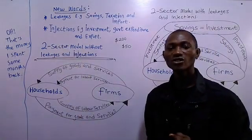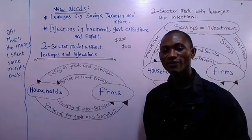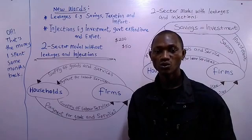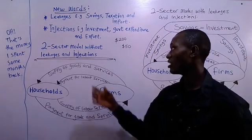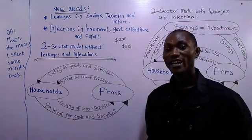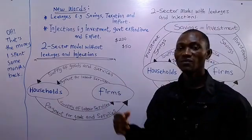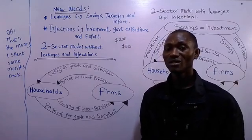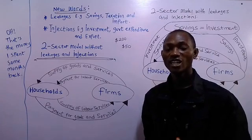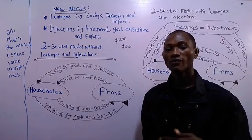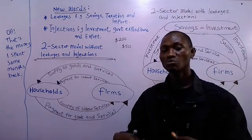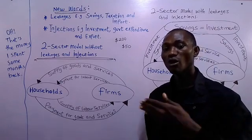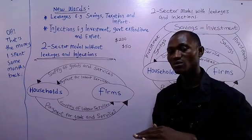Injections. Injections are economic activities that increase the flow of income or money in circulation. Another word for injection is inflows. Examples of injection activities are investment, government expenditure, and exports. With respect to investment — investments means the use of resources to build new capital goods, primarily to create employment. So when more money is being used to build new capital goods such as roads, schools, and dams, more money is being pumped into the economy and the money in that country will increase.